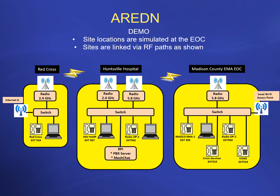This is an overview of the network set up and tested here in Madison County. We do have a Raspberry Pi server running on the network, which provides PBX support for telephone connectivity between nodes. It all depends on what you want to set up, how many different nodes you have, and what the served agencies need as support. Hopefully this gives you an idea of the flexibility of the ARDEN mesh network.